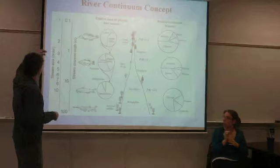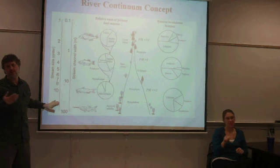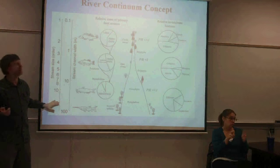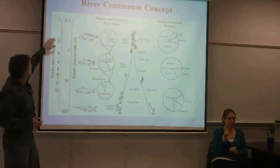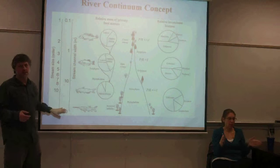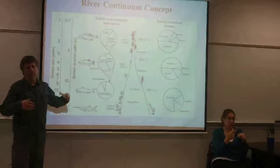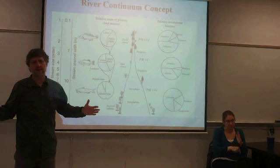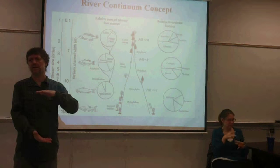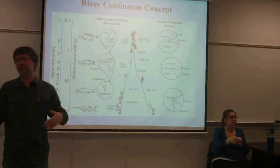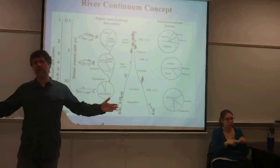We start at first order streams and go down to say 10th order streams — the Missouri River or something like that or larger. The channel width is going to increase substantially, and channel width actually increases more than depth does as you move downstream. So streams really tend to get wider as they get larger, and the width to depth ratio increases as you move downstream.